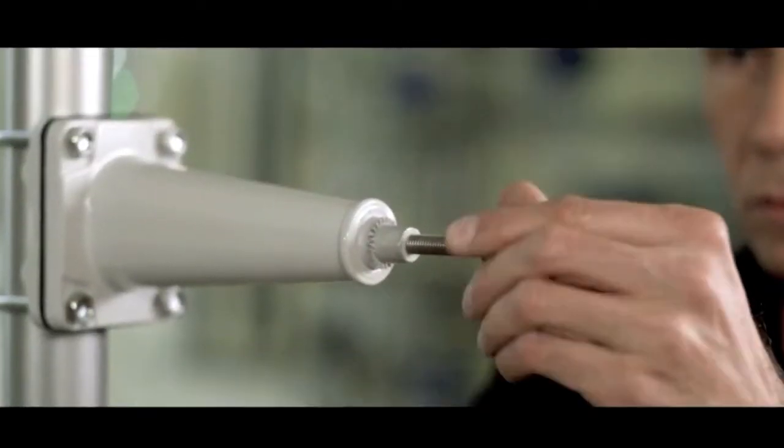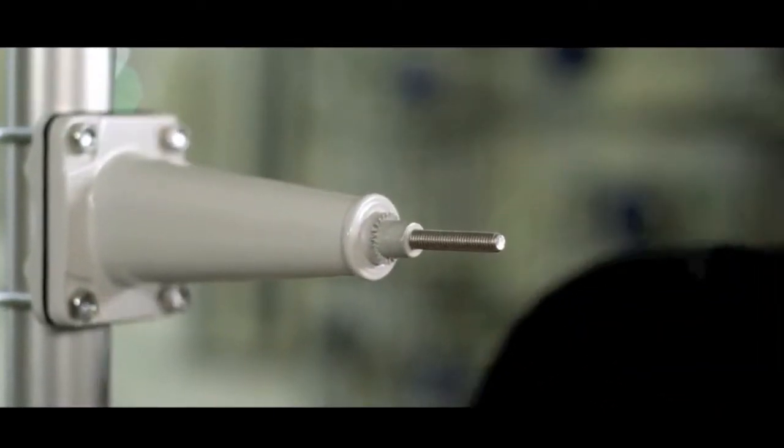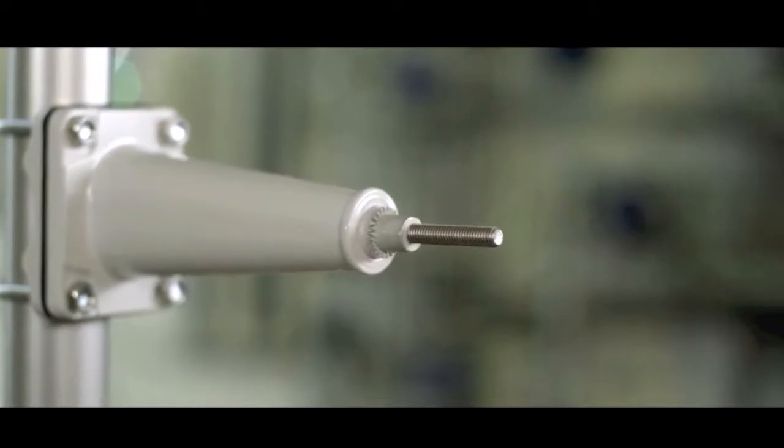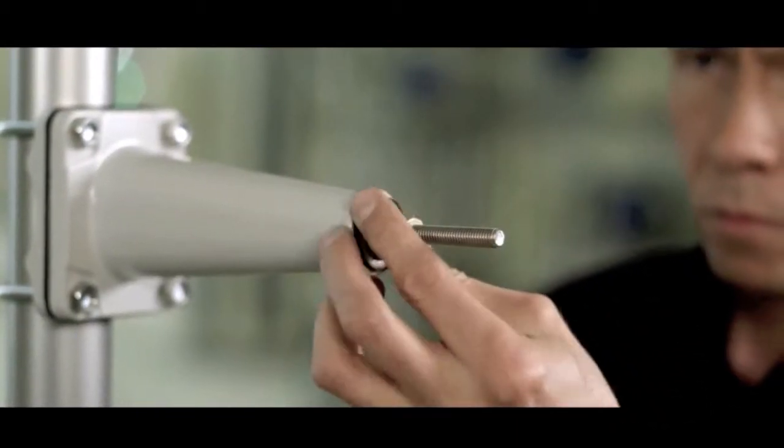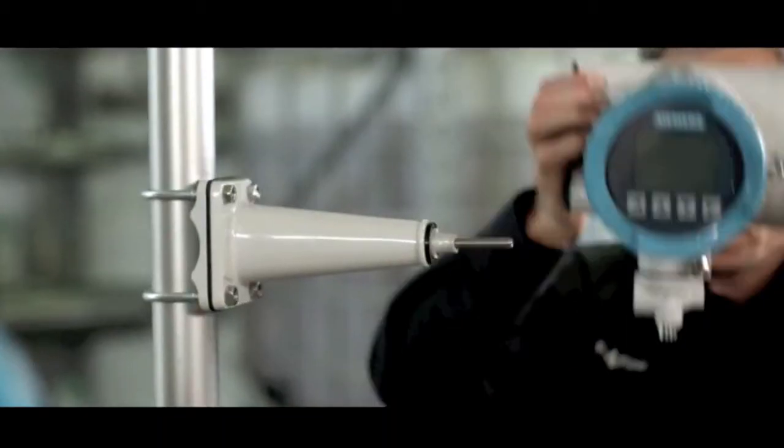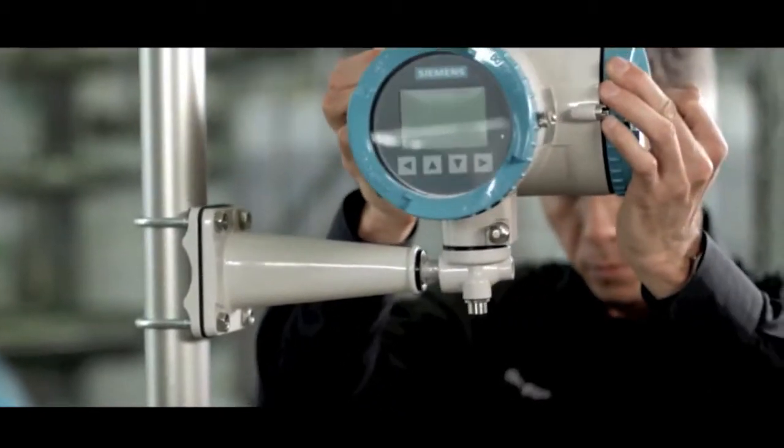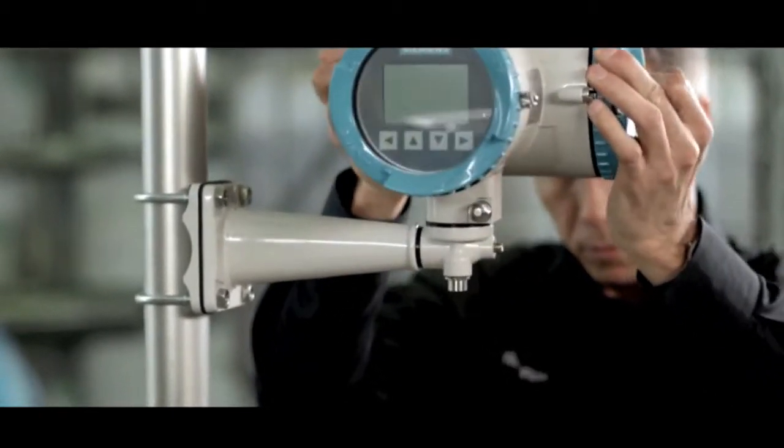Now remove the nut at the end of the bracket to mount the transmitter. Ensure that it is correctly positioned and then tighten the nut firmly.